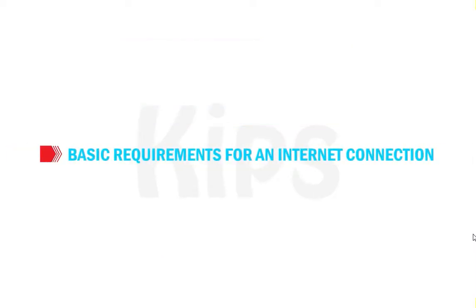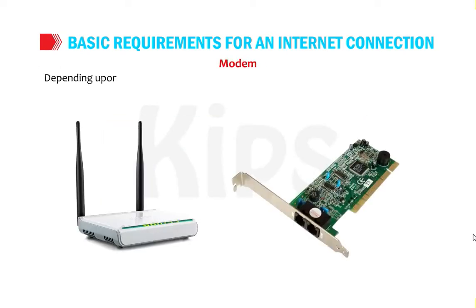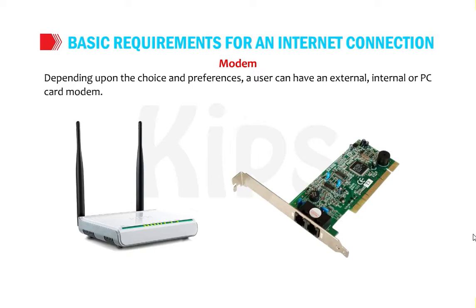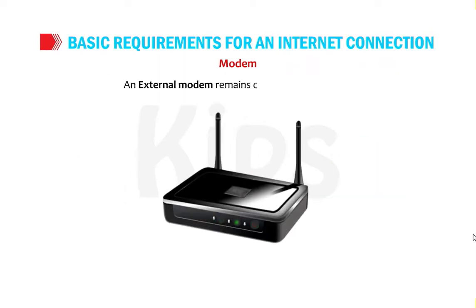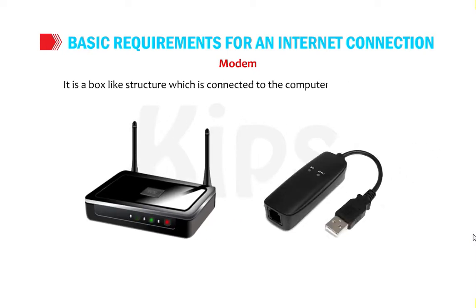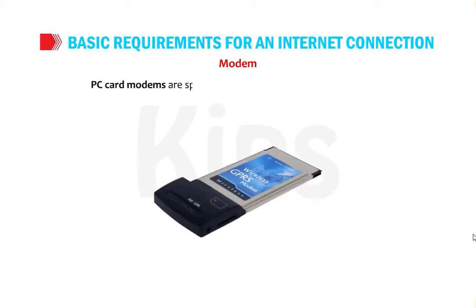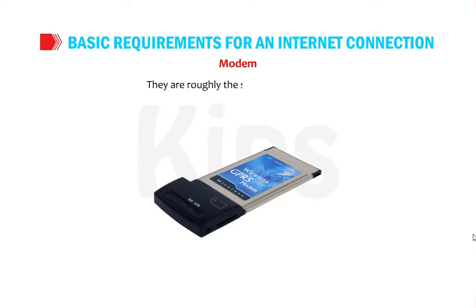To connect your computer to the internet, you need the following hardware and software. First, a modem — a user can have an external, internal, or PC card modem. An external modem is a box-like structure connected to the computer through a USB port. An internal modem comes pre-installed in the computer. PC card modems are designed for portable computers and are roughly the size of a credit card.